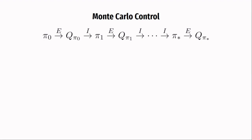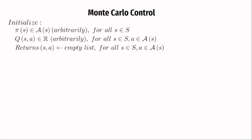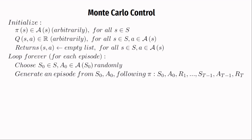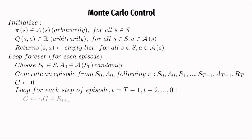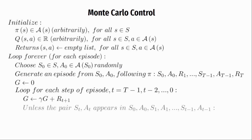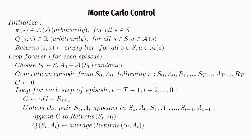Let's see how we can do policy iteration in model-free settings using the action value estimate. Our policy picks the action with the most value. We initialize our policy function and action value function arbitrarily and our returns as an empty list. For every episode, we select a starting state and follow policy pi to generate an episode. We initialize our G variable, start from the back of the episode, and calculate the return for that step. Unless the state-action pair (S(t), A(t)) appears earlier in the trajectory, we append it to the returns list and update our Q values for that state and action by averaging all observed returns. Finally, we improve our policy by changing it to take the action with the maximum Q value at that state.